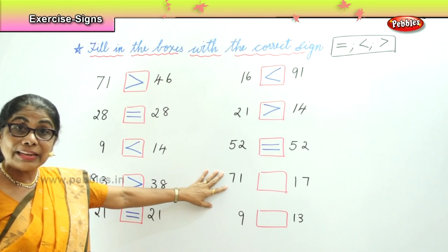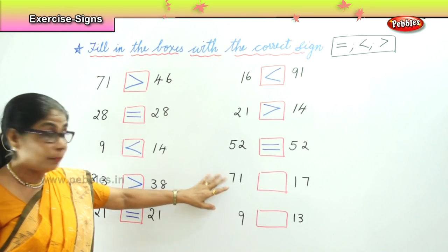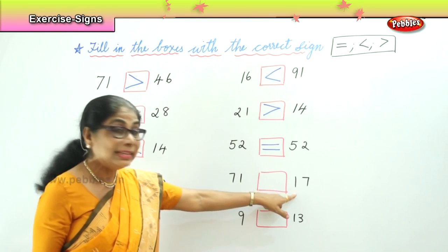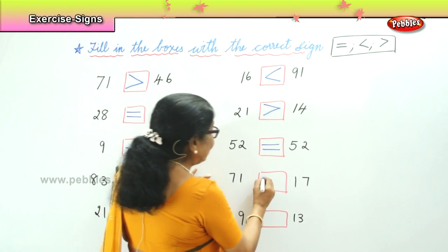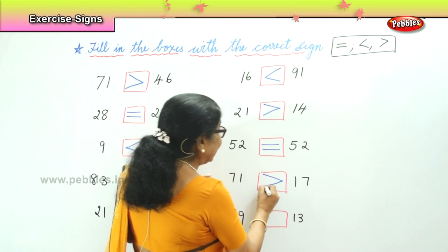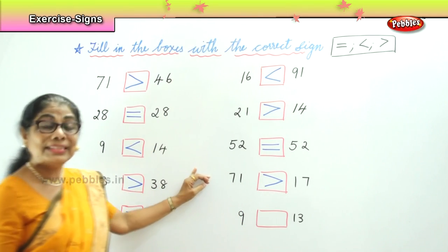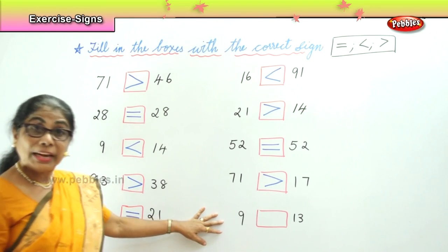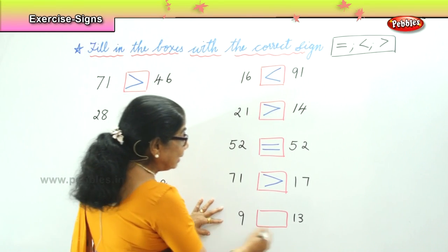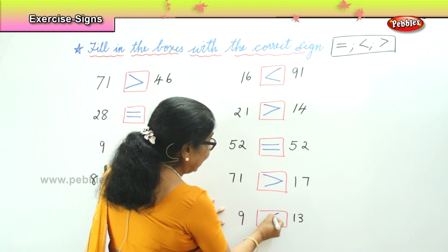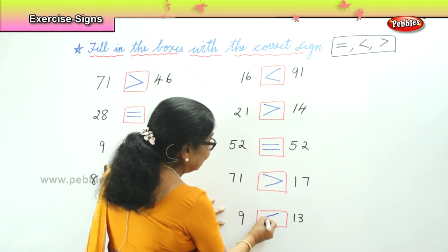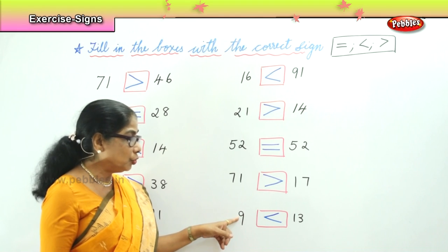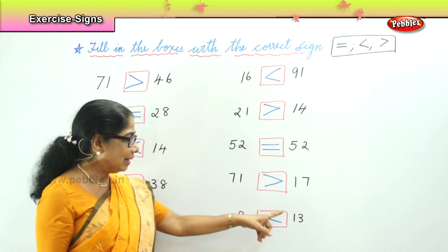And here you have 71 and 17. 71 is a bigger number than 17 — 71 is greater than 17. And 9 and 13: definitely 9 is less than 13. The beak points towards the less number — 9 is less than 13.